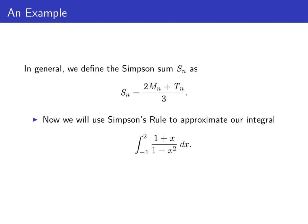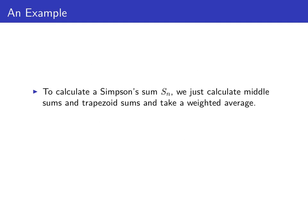So now we'll use Simpson's rule to approximate this integral we started with, integral from -1 to 2 of (1 + x)/(1 + x²) dx. Now to calculate a Simpson's sum, we have to calculate the middle sum and the trapezoid sum and take a weighted average.